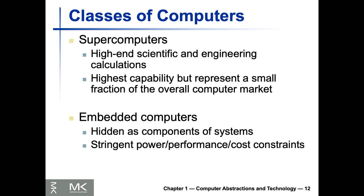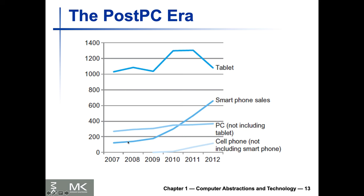Looking at the trend, the US used to dominate the top rankings but now Japan and China and other actors are building more performant supercomputers. On the embedded side, looking at a chart where the Y-axis represents devices sold in millions: PCs have plateaued, tablets surged in popularity and came back down, and smartphones continue to grow. That middle PC class has diverged into these two different extremes.